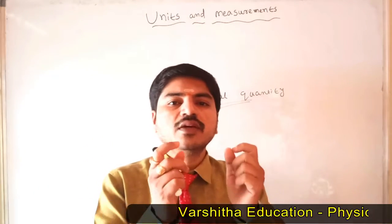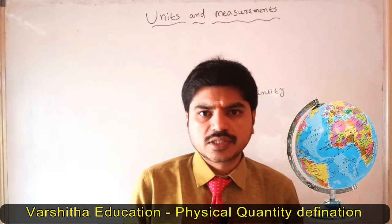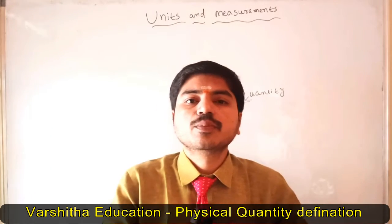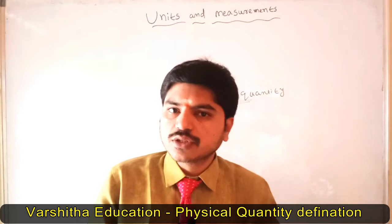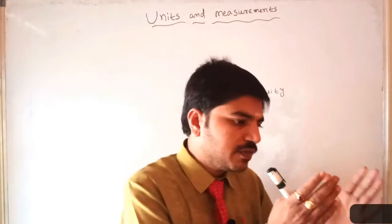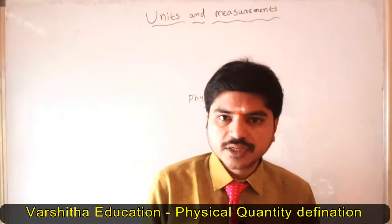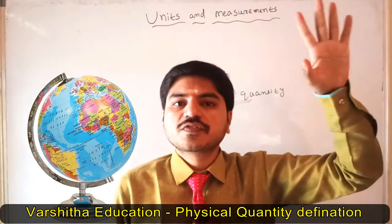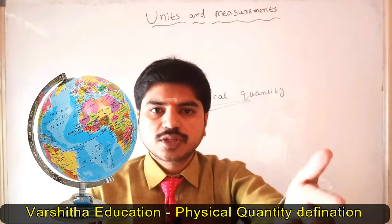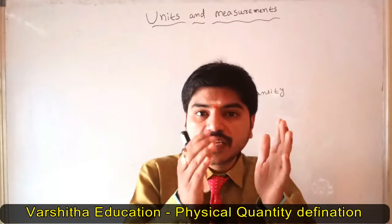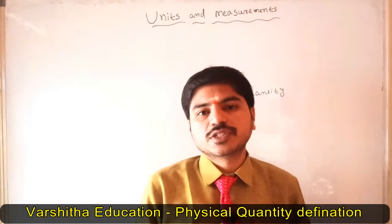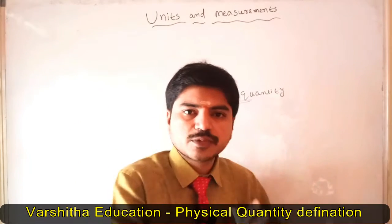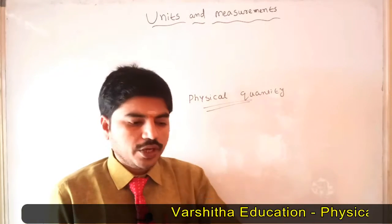Except imaginary things — we cannot justify where an imaginary thing is present and where it is not present. That's why imaginary things are not physical quantities. A physical quantity, as the name suggests, must be physically present — it must occupy some space in nature.